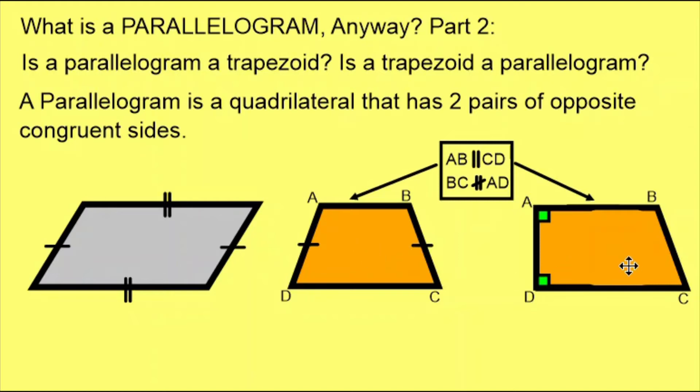But neither of the trapezoids are following this rule. In the one on the left, we have one pair of opposite congruent sides, but the other pair are not congruent. In the one on the right, we don't have any congruent sides in this trapezoid.